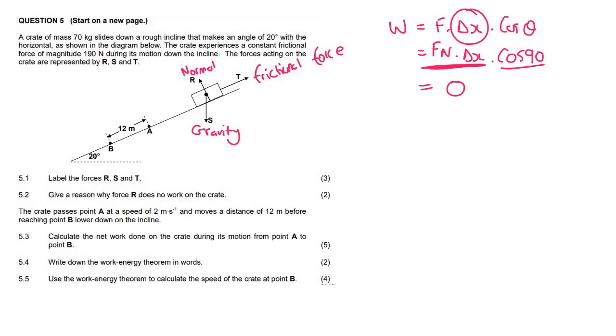Now they tell us that the crate passes A at a speed of 2 meters per second, and then moves a distance of 12 meters before reaching point B. Calculate the net work done on the crate during its motion from A to B. So the net work done is W net. Now that doesn't necessarily mean we're just going to use W net equals to change in EK. We might just need to use W net. So we know that the formula for work is equal to F delta X cos theta. Now I'm going to draw another free body diagram because I don't really like these types of free body diagrams. It's better when you've got gravity in perpendicular and parallel components.